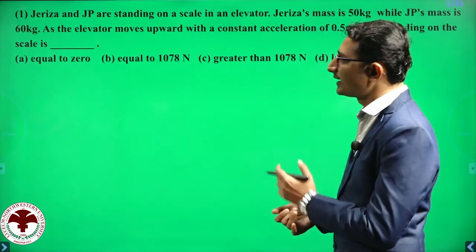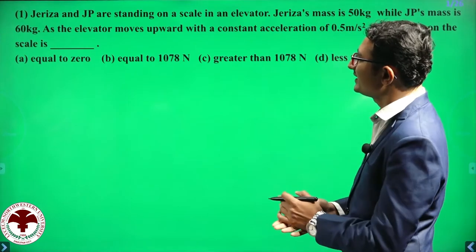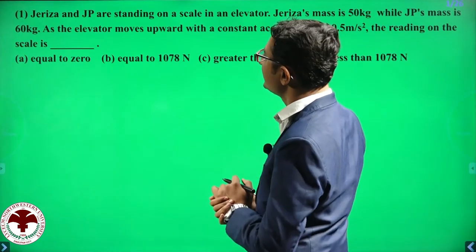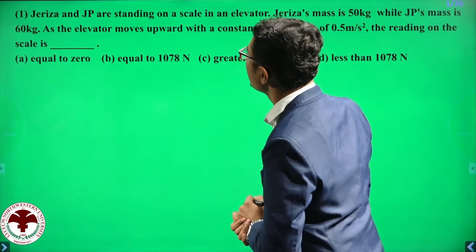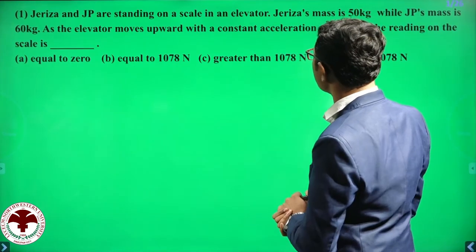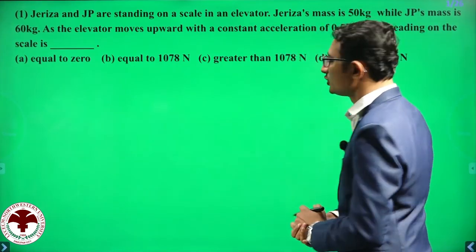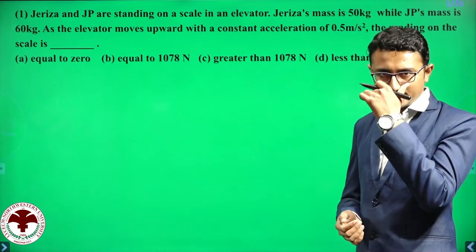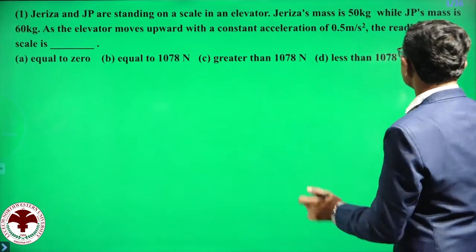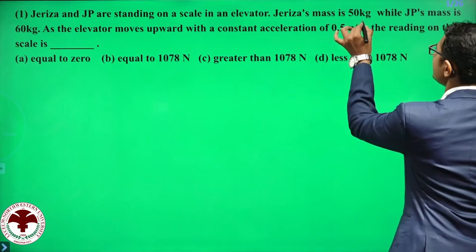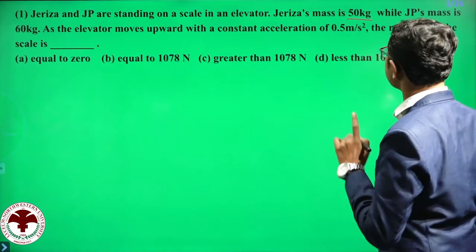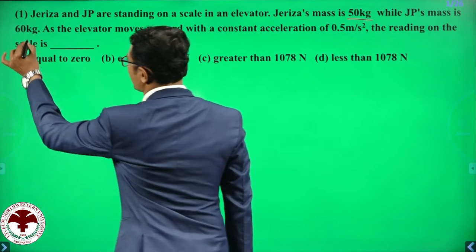We are starting with the first question. The first question is very simple. Let us read the question: Jeriza and JP are standing on a scale in an elevator. We have two persons standing in the lift. Jeriza's mass is 50 kg, and the second person's mass is 60 kg.